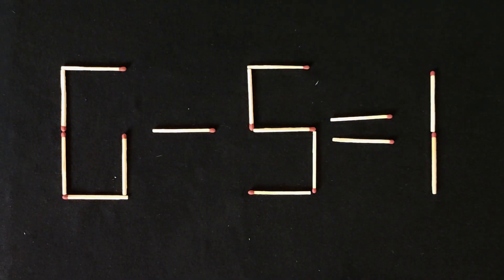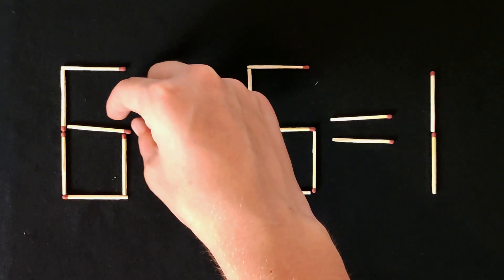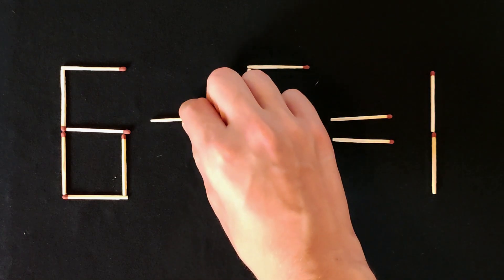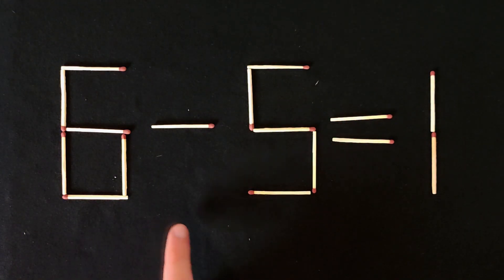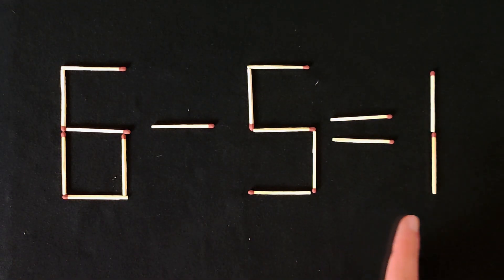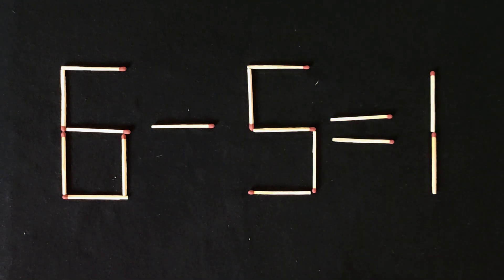You need to move this match. Yes, you need to move it here. And now six minus five equals one. Now it's correct.